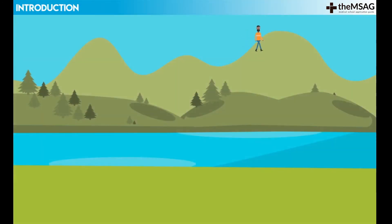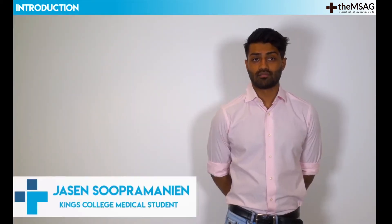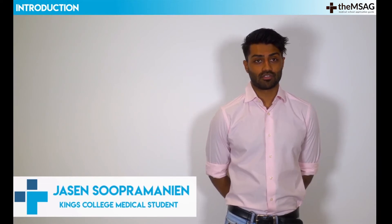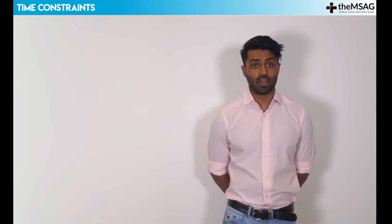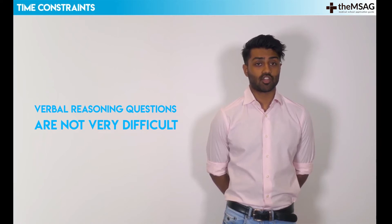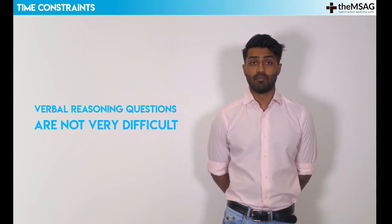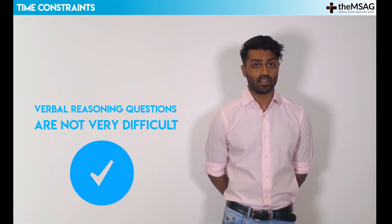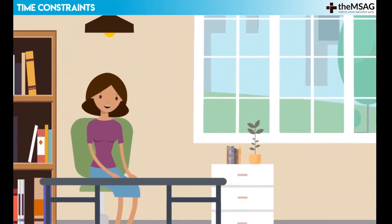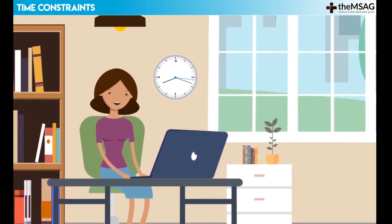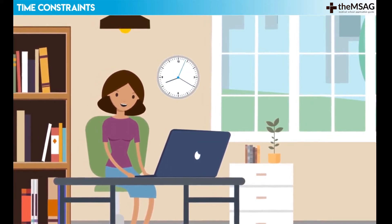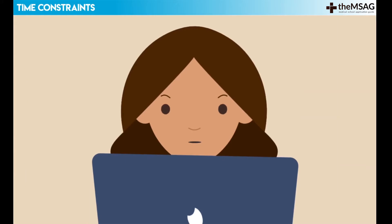There are a few steps you can take to prepare yourself for the verbal reasoning section of the UCAT. In order to achieve the highest score you can, it's very important to keep practicing questions. When practicing verbal reasoning questions, it's important to bear in mind the time constraints from early on in your practice. The questions in this section are not very difficult and, given enough time, many candidates will be able to answer all of the questions correctly. It's okay to start your test preparation by reading a few passages thoroughly and attempting to answer the questions at your own pace.